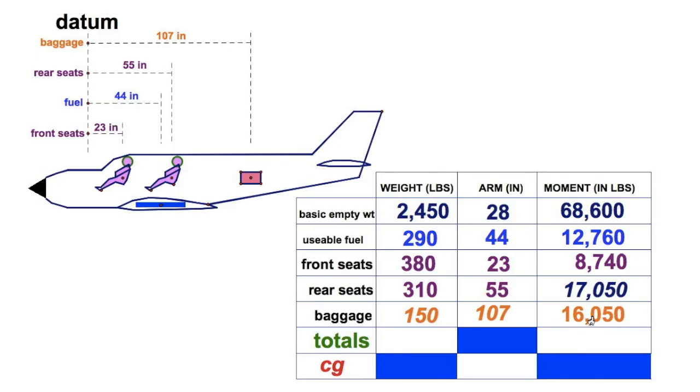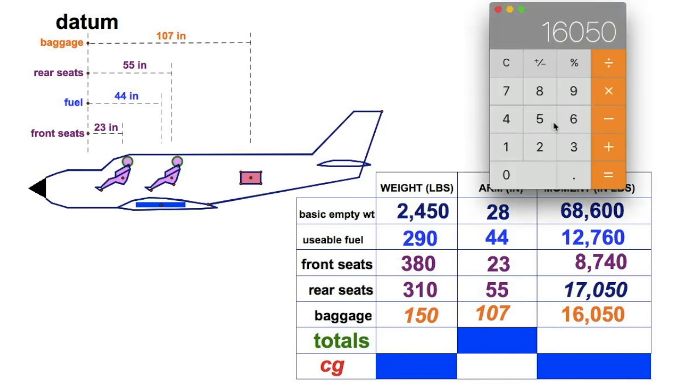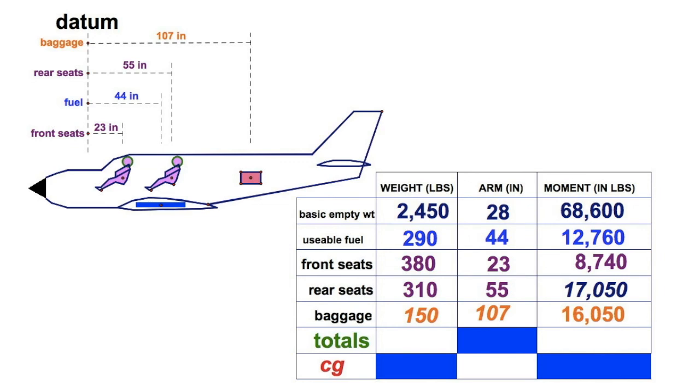Add up the left column, and let's add up the right column. A lot of arithmetic here, but it's worth it. 2,450 for the empty aircraft, and we're going to add 290 pounds of fuel, then 380 pounds in the front seats, plus 310 pounds in the rearward seats, and 150 in the baggage. 3,580. I sure hope that's, I'm assuming that in this made-up aircraft, that's within max takeoff.